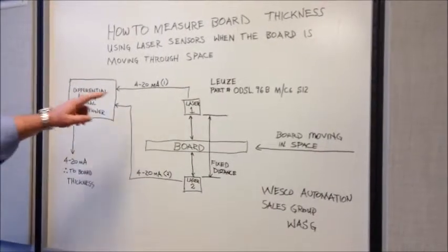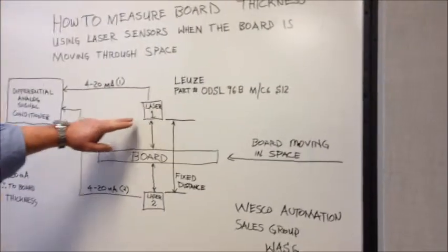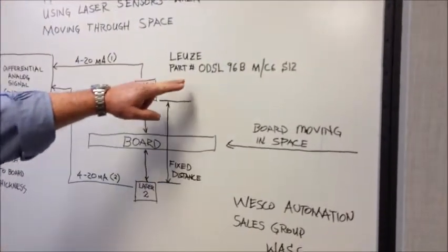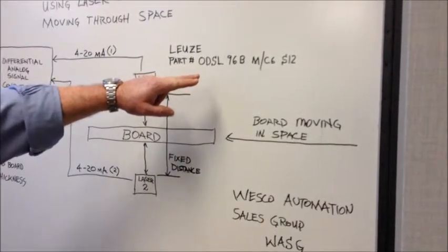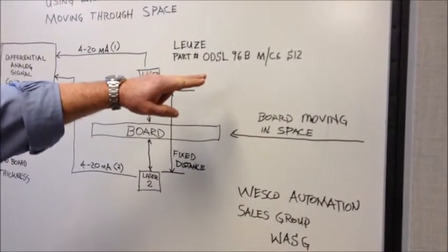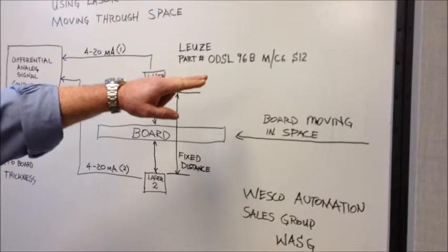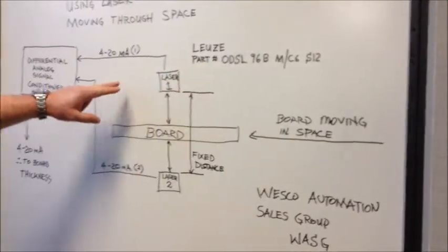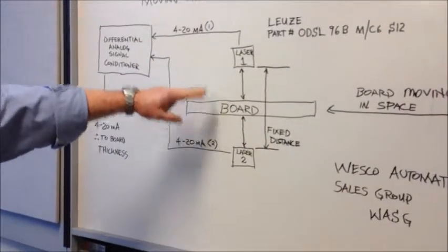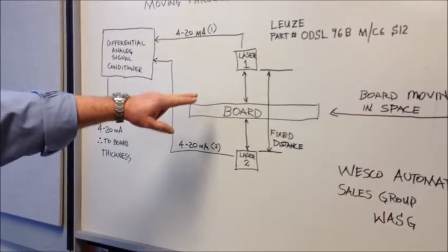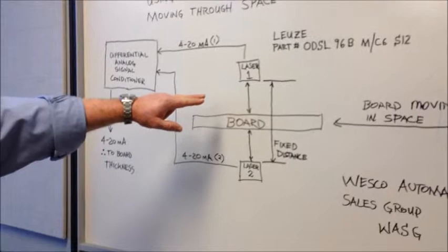So what we're doing today is we're using two Leutze laser sensors. This is the part number ODSL96BM-C6S12. And we're going to mount these particular sensors at whatever distance is convenient, it doesn't really matter, they have a 10 meter range each.